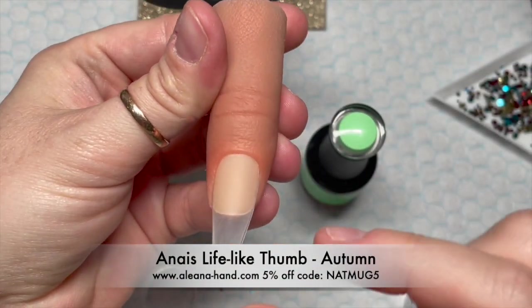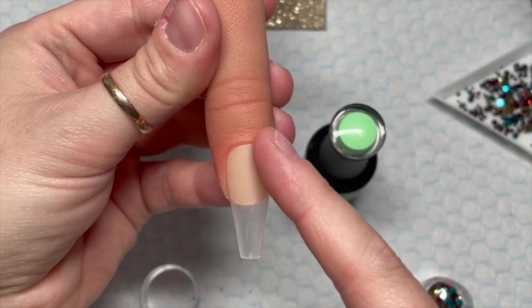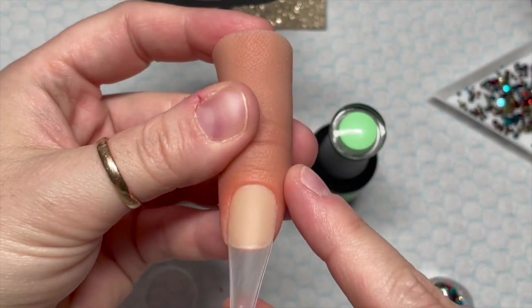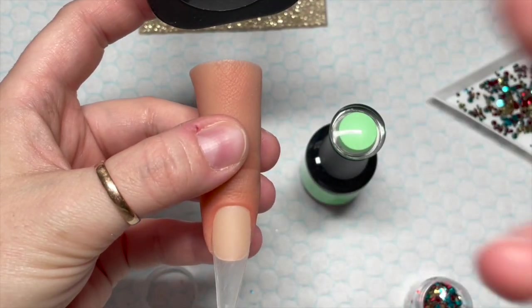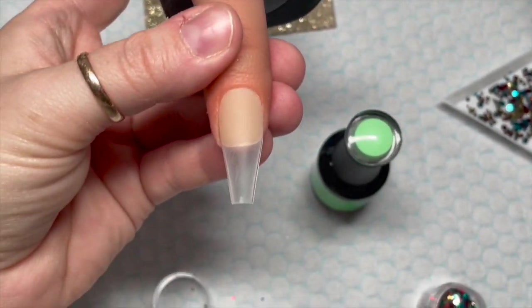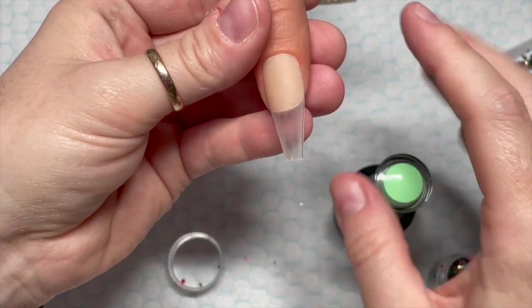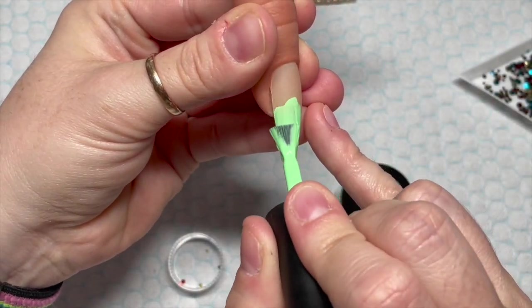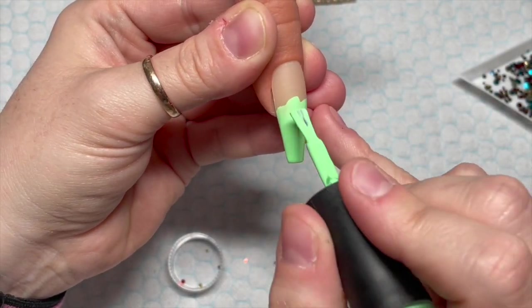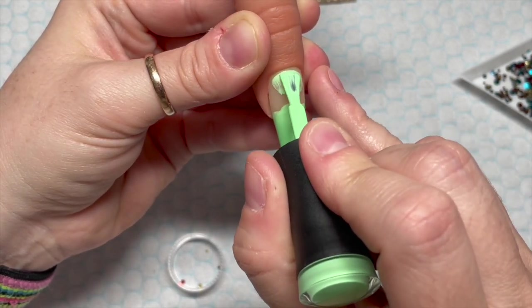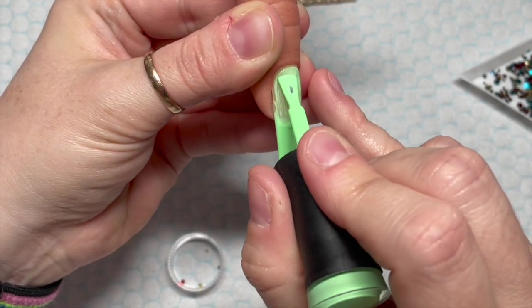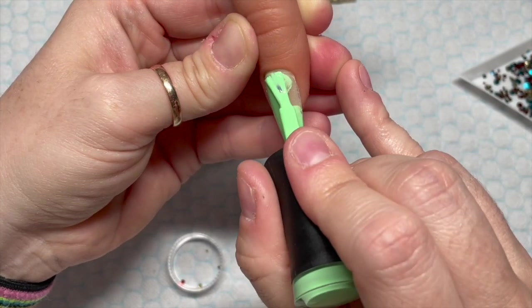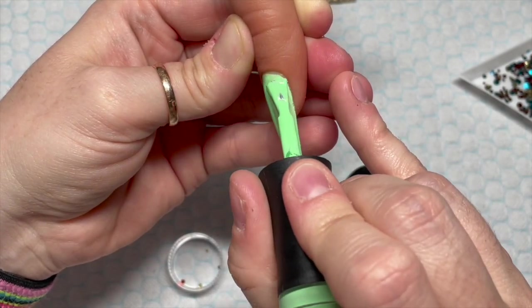I'm using my Aliana thumb. I've put a full cover tip on, and I love the thumb, it's amazing. I'm going to stick it to my magnetic stand, and it's just brilliant, absolutely brilliant. You can get 5% off that as well using my code NAPMUG5. All the discount codes and stuff will be down below, so you can find the discount codes and the links, and then you're ready to go.